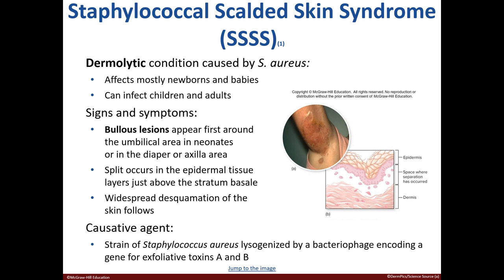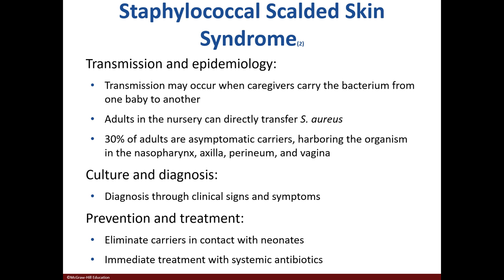Staphylococcal scalded skin syndrome is caused by Staph aureus and mostly affects newborns and babies. Lesions appear around the umbilical cord, diaper, or armpit area. The layers then split, and the toxins that Staph aureus produces lead to a burnt appearance, and the skin then sloughs off. This disease can be transmitted by direct contact with caregivers or by droplet contact. It can be diagnosed by signs and symptoms, prevented by removing carriers from nurseries, and treated with antibiotics.